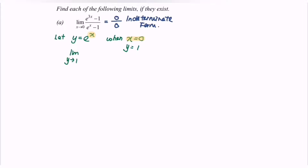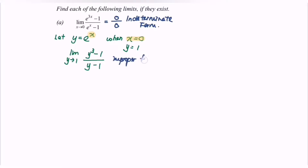Since e to the power of x is y, we now have y cubed minus 1 over y minus 1. The power of the numerator is 3 and the power of the denominator is 1, so this is considered an improper fraction.